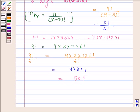So, the number of 3-digit numbers that can be formed by using the digits 1 to 9 if no digit is repeated is 504. This is our required answer.